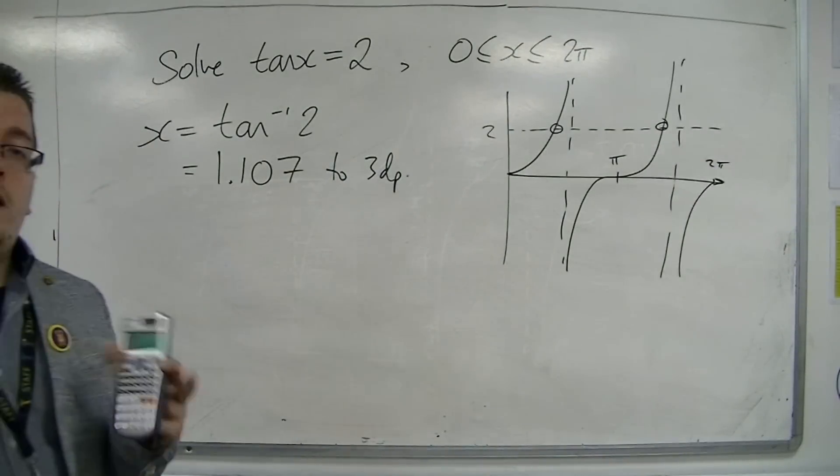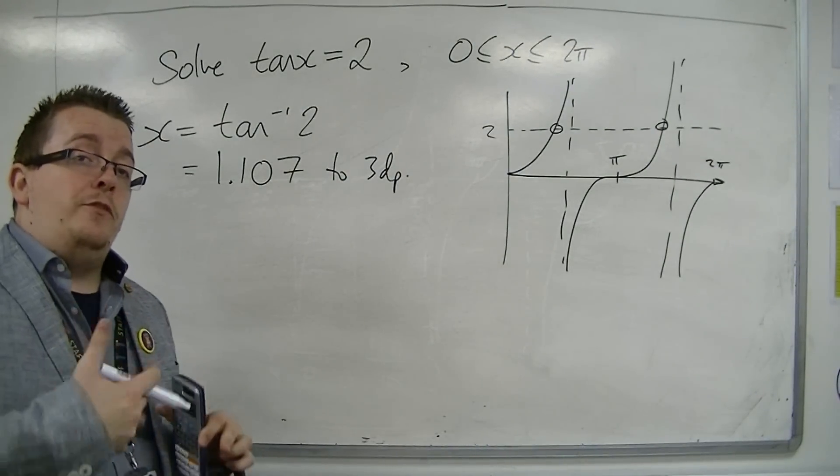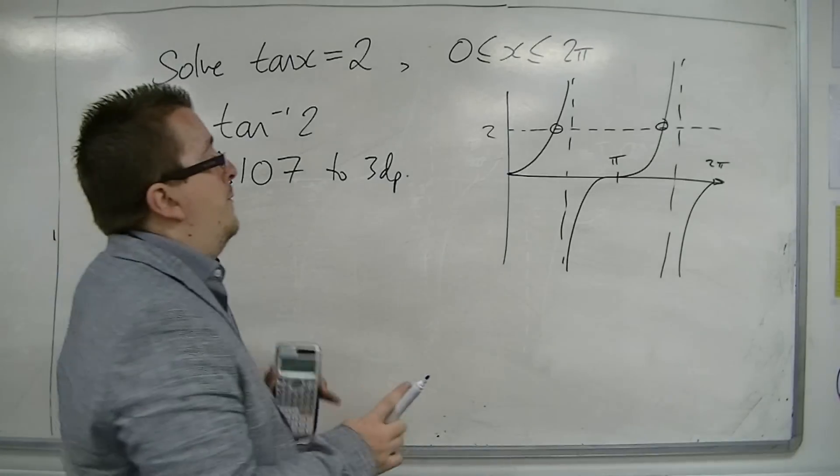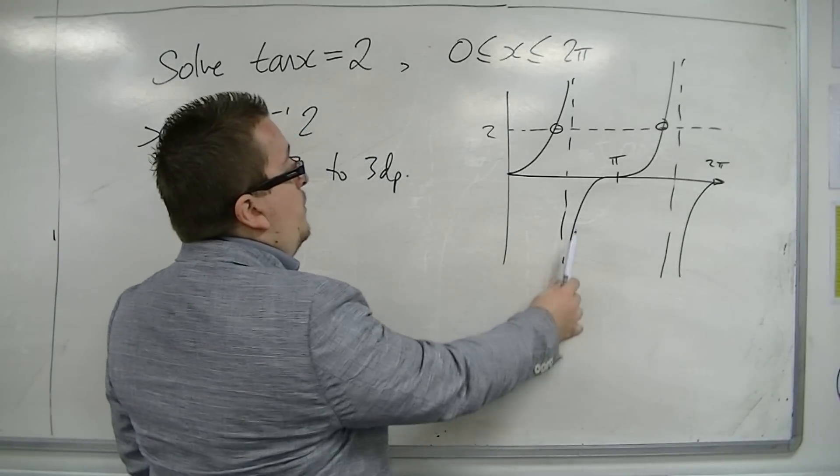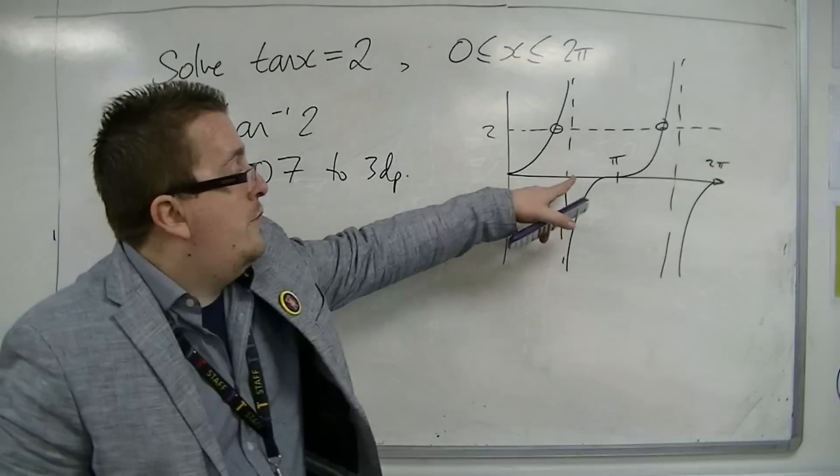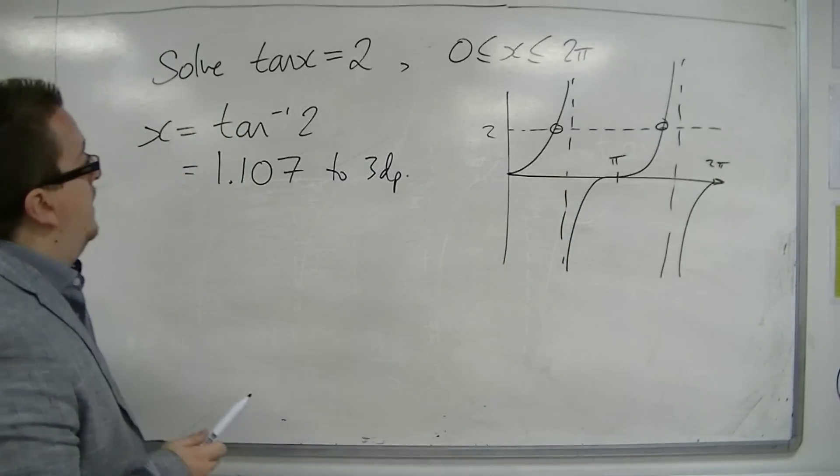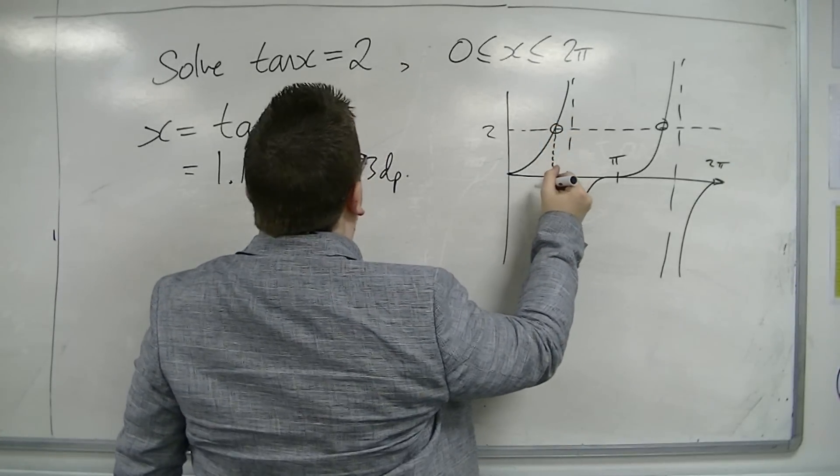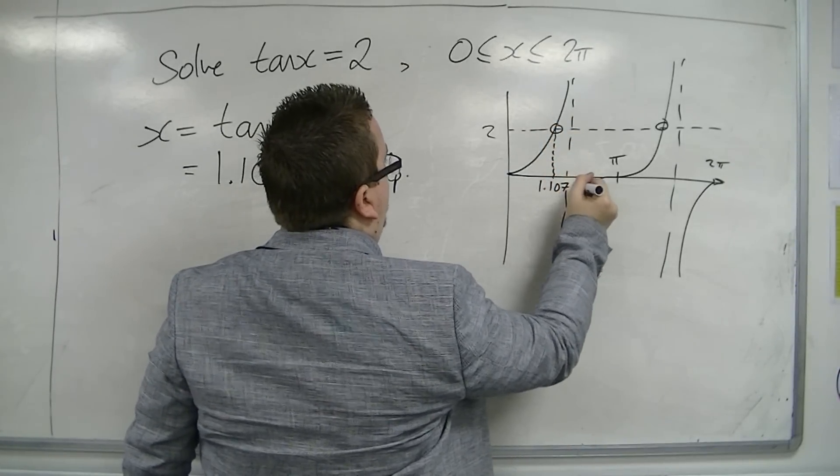Now, the calculator is only going to give you one value back, like it did for sine and cosine. This time, because tan, the calculator is only going to give you a value between minus π over 2 and π over 2. But not equal to those, because obviously there are asymptotes at those points. So here is our first solution, and that is there. So that's our 1.107.